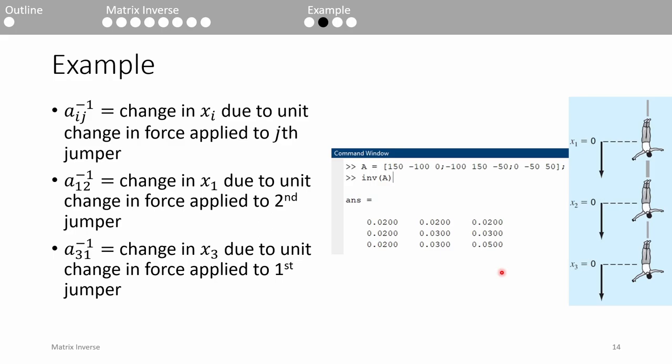But now, because of the additional elongation of the third cord, the third jumper is moved farther downwards. I hope these explanations helped you link the physical interpretations to the numerical output you get from MATLAB. You should especially pay very close attention to when an entry in the A inverse matrix is 0.